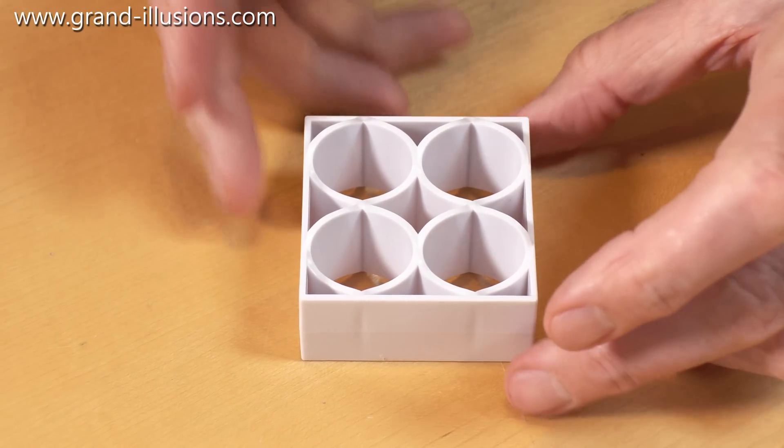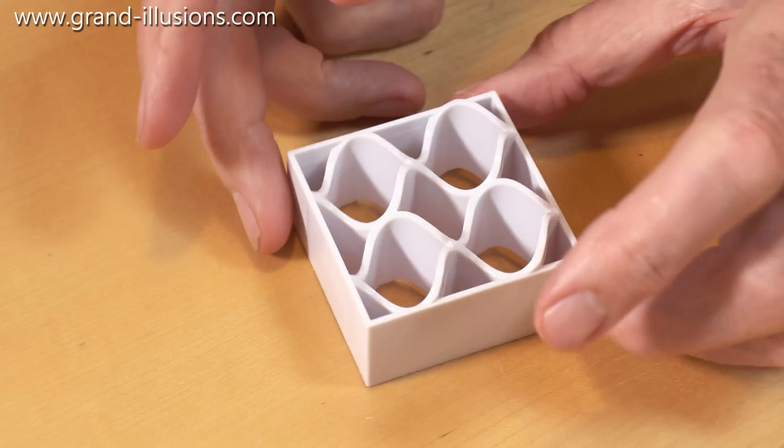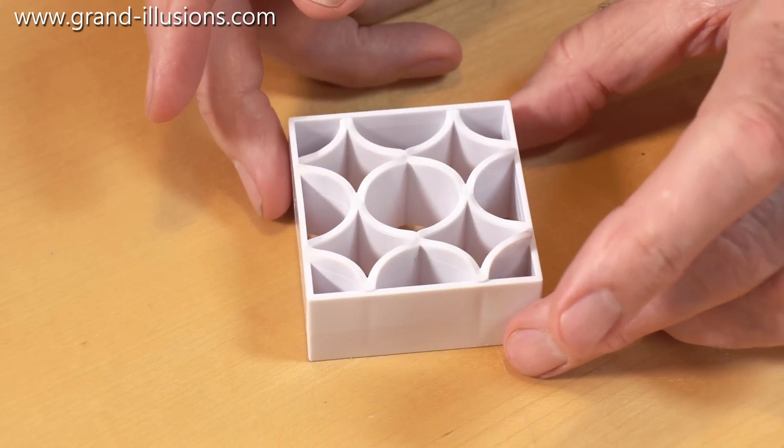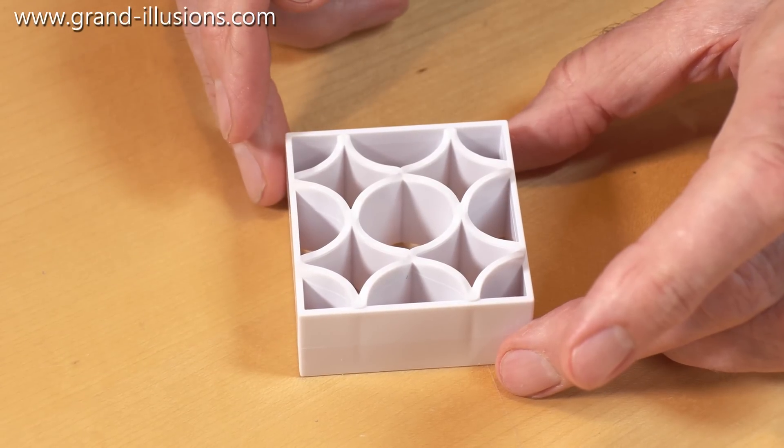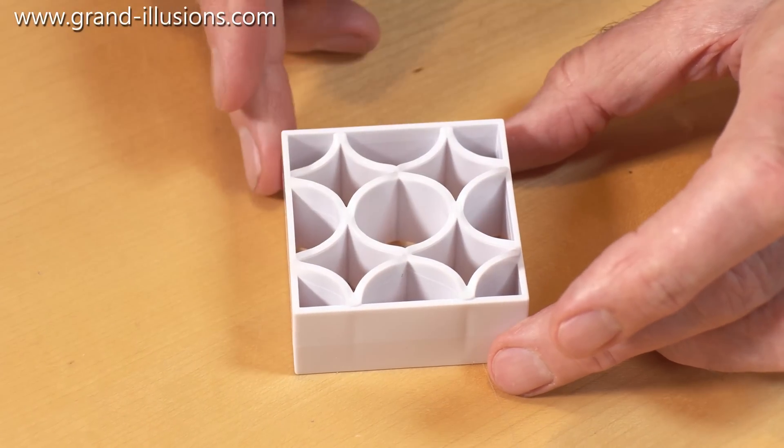And then when we go back again and try to count up all the bits and pieces, there is one complete circle in the middle, but I've noticed that there's four half circles around, which is two circles worth, and even little quarter circles in the corners.